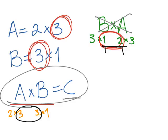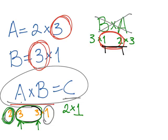When you multiply two matrices, the resulting matrix has the same number of rows as the first matrix and the same number of columns as the second matrix. So the size of C will be 2 times 1. To summarize: the adjacent numbers — the columns of the first matrix and the rows of the second — must be equal, and the resulting matrix takes the outer dimensions.